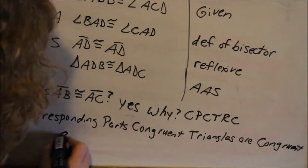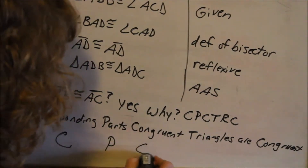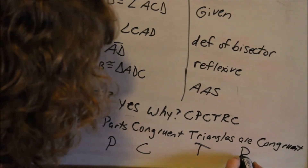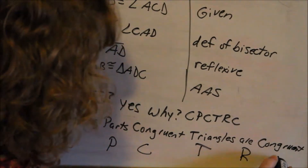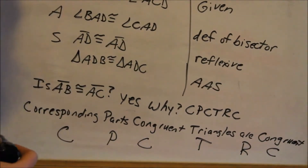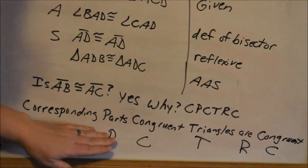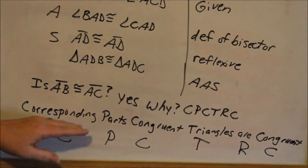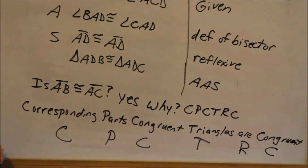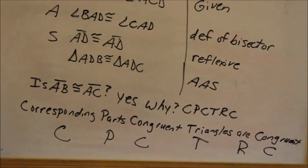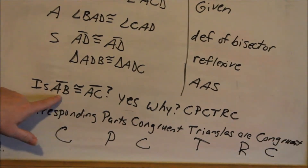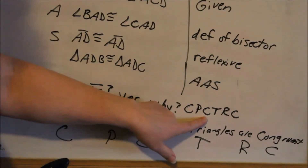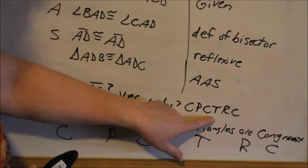There's a statement called CPCTRC — that stands for Corresponding Parts of Congruent Triangles are Congruent. Once you show that your triangles are congruent, all of the other corresponding parts are also congruent. So we can say that line segment AB is congruent to line segment AC by CPCTRC.